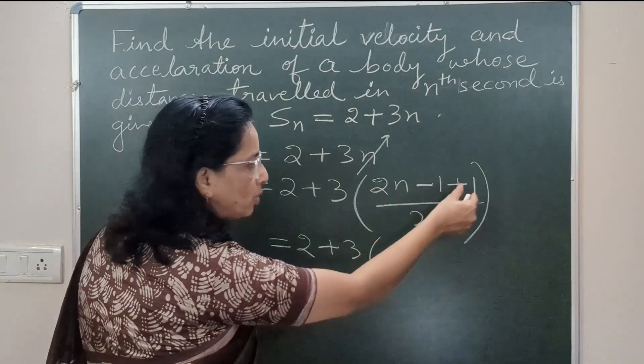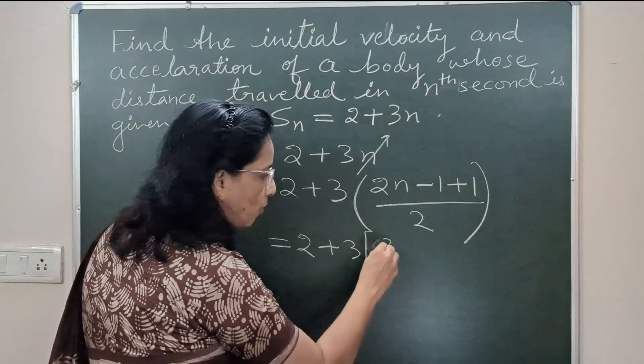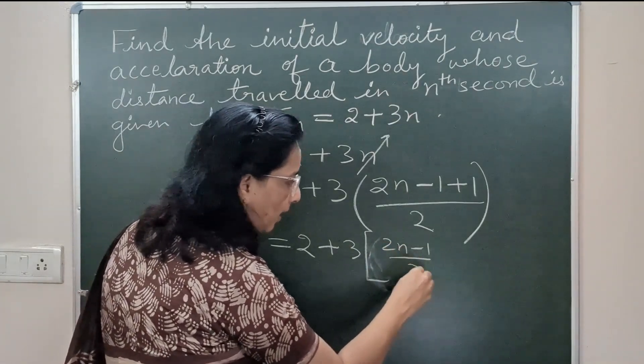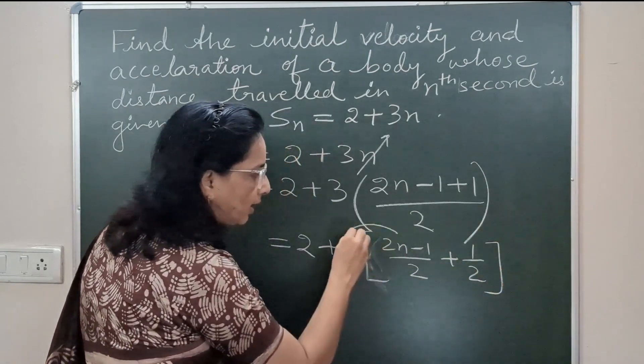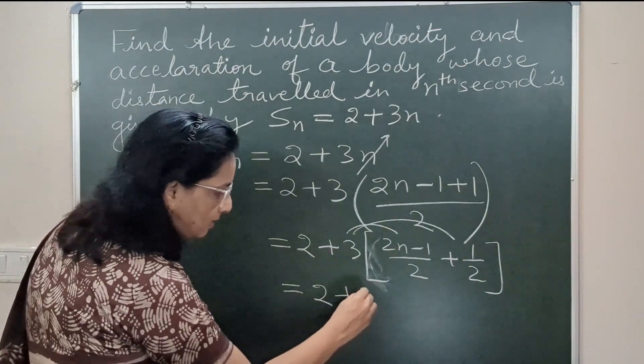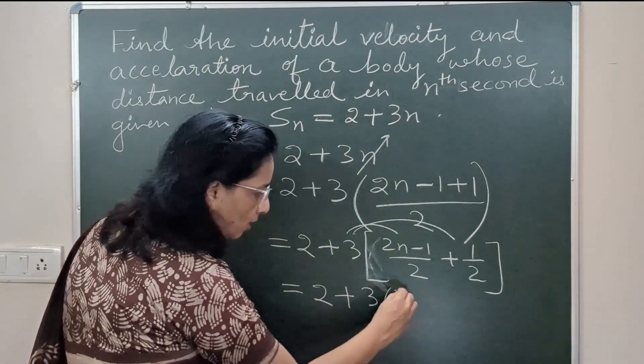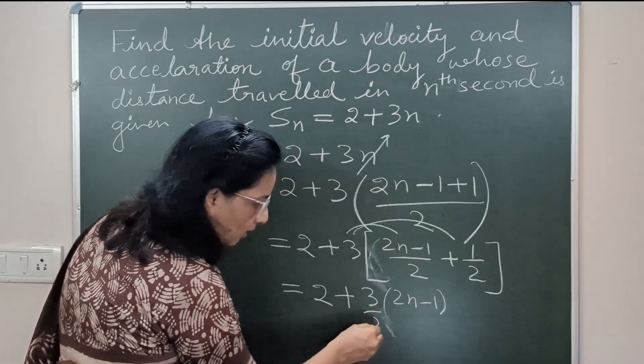Now 3 we can distribute over, and this appears as 2 + 3 times (2n - 1)/2 plus 3 times 1/2, which is 3/2.